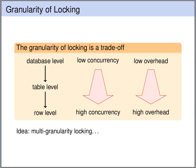There is a trade-off between concurrency and overhead with respect to the granularity of locking. If we are always locking entire databases, then we have very low concurrency — no parallel access to the same database — but we have very low overhead. If we are always locking at the row level, then we have high concurrency, but we also have high overhead.